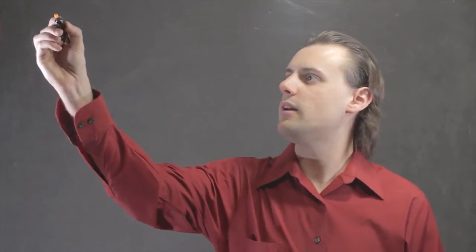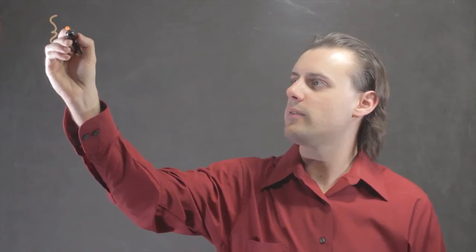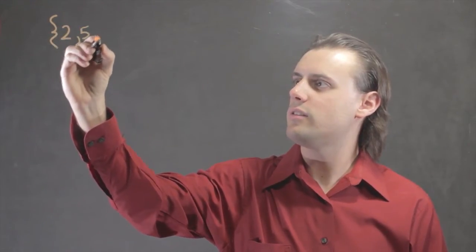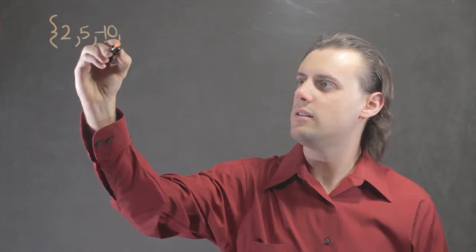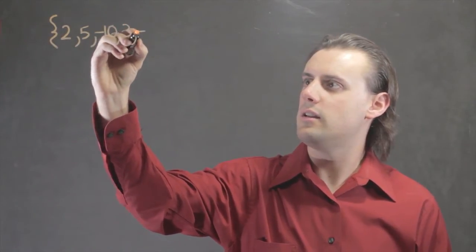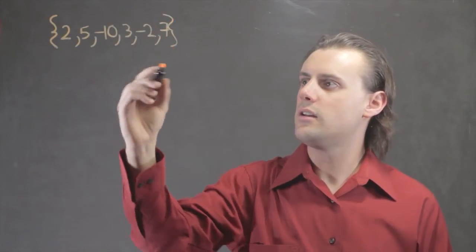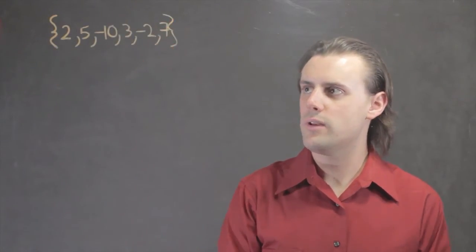My name is Walter Unglaub and this is how to order positive and negative numbers. Let's say we start with an initially unordered set of numbers, where I denote my set using curly braces, and let's say I have 2, 5, negative 10, 3, negative 2, and 7.